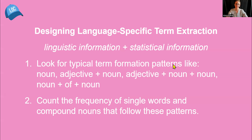That information is then combined — it's taught to the machine — and combined with statistical information. So the machine looks for the frequency of single words and compound nouns that follow these patterns. The terminology extraction results lists are populated based upon the number of times that the words fitting these patterns appear in a corpus.